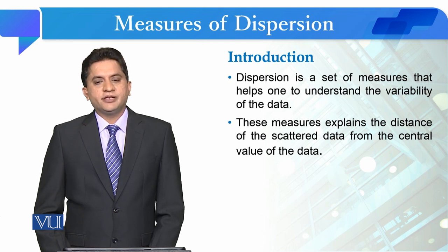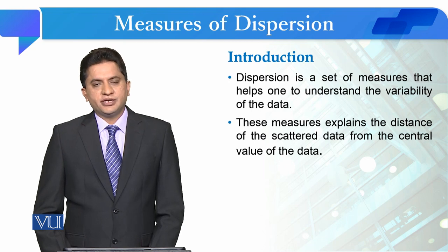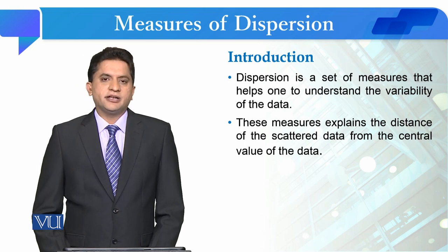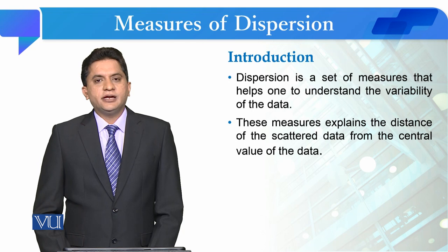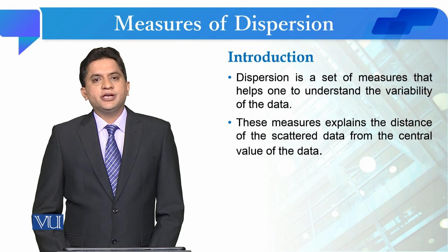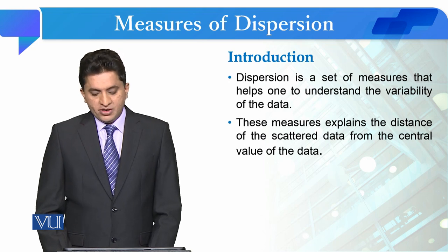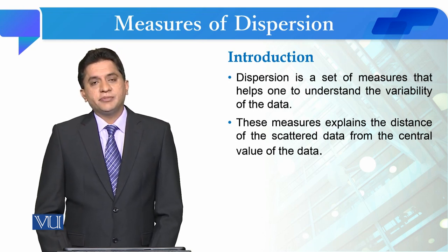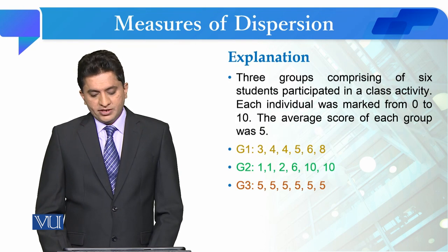For instance, if you have a variable like age with 100 cases, you have entered a midpoint. Now you have to see how much this midpoint is dispersed on both sides, how much scattered it is. So for this reason, we talk about dispersion in statistics, and there are different measures available to calculate how much the midpoint is dispersed on both sides.